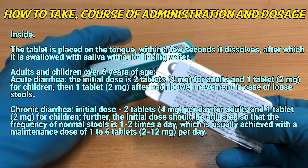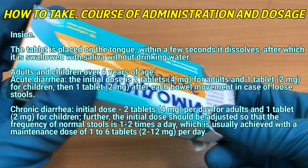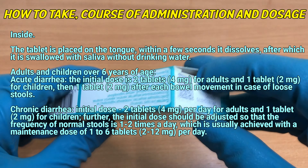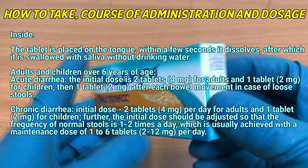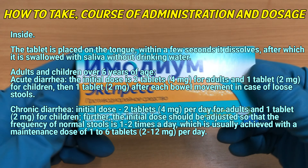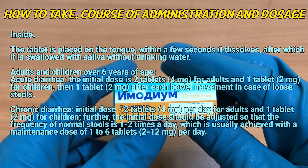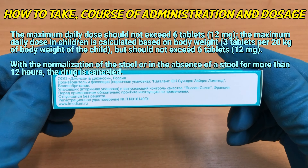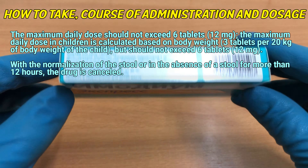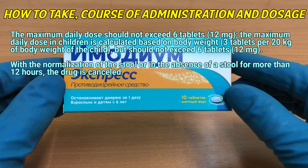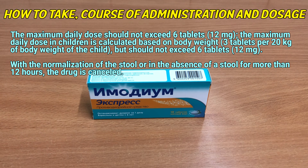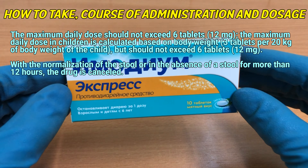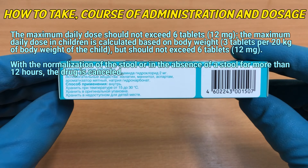Chronic diarrhea: initial dose 2 tablets (4 mg) per day for adults and 1 tablet (2 mg) for children. The initial dose should be adjusted so that the frequency of normal stools is 1–2 times a day, which is usually achieved with a maintenance dose of 1–6 tablets (2–12 mg) per day. The maximum daily dose should not exceed 6 tablets (12 mg). In children, the maximum daily dose is calculated based on body weight: 3 tablets per 20 kg of body weight, but should not exceed 6 tablets. With normalization of the stool or absence of stool for more than 12 hours, the drug is cancelled.